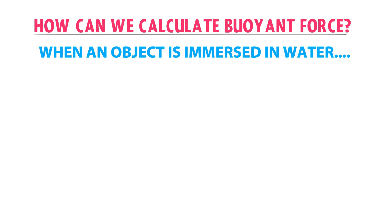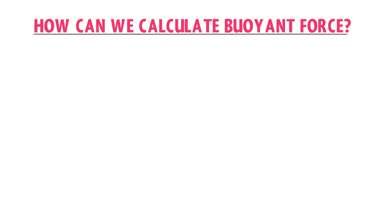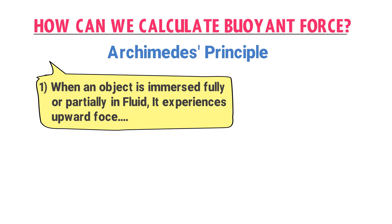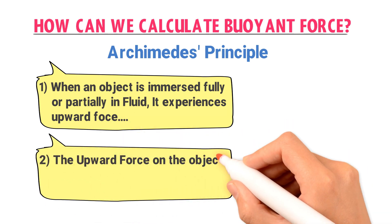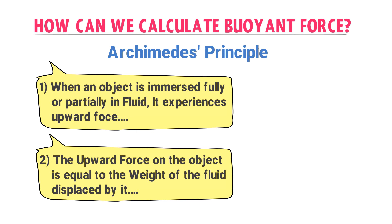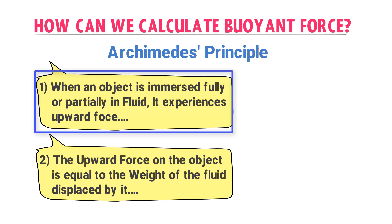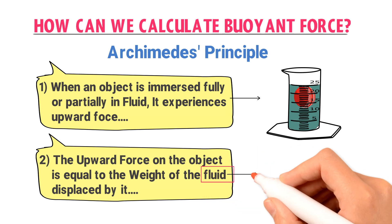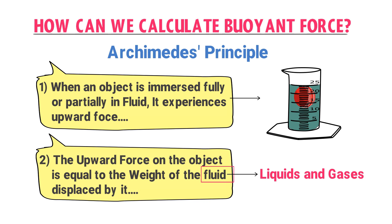When an object is immersed in water and displaces some water, here comes Archimedes' principle. It states two important points. First, when an object is immersed fully or partially in a fluid, it experiences an upward force. Second, the upward force on this object is equal to the weight of the fluid displaced by it. Remember that fluid means liquids and gases.